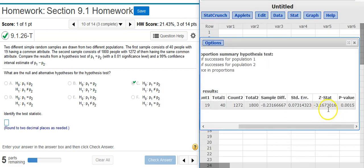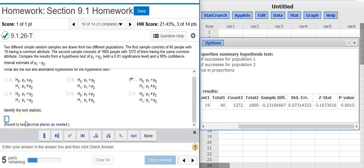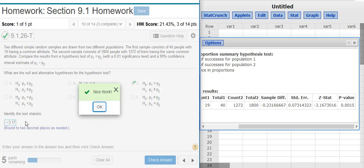Here at the very end of the table, second to last value, I see my test statistic, which is a z-score. Nice work!